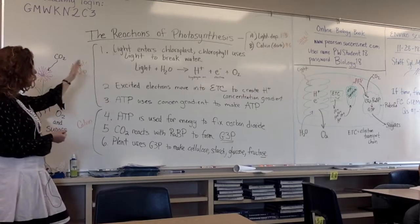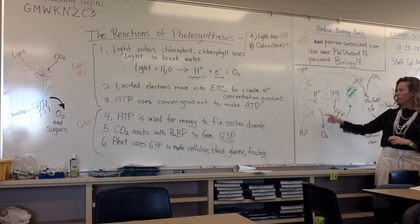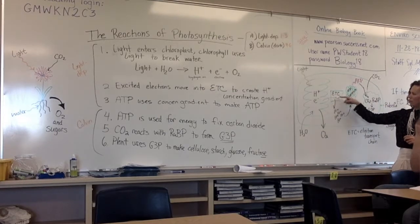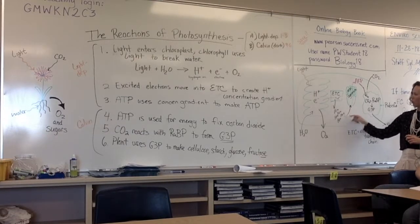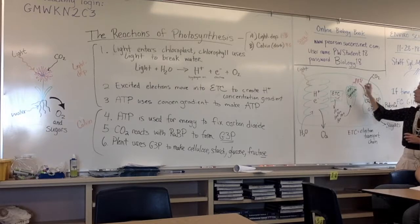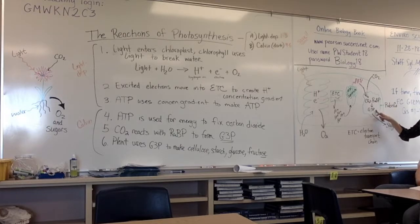To review, these two parts work together. Light comes into the chloroplast. And the chlorophyll uses light to break down water into hydrogen ions and electrons. The electrons move into the electron transport chain to facilitate making a hydrogen ion concentration gradient. They shoot through the ATP synthase, which activates it and makes it create ATP. That ATP then goes into the Calvin cycle with CO2, where CO2 is fixed by Rubisco, fixed to RubP to make G3P. G3P is the backbone of all sugars in the plant, such as cellulose, starch, glucose, and fructose.